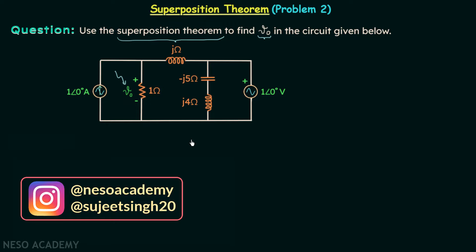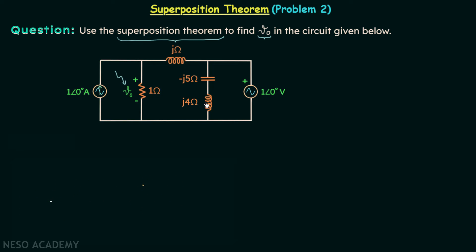When you observe the given network, you will find we have two sources. This one is source number 1, and this one is source number 2. Both sources are independent in nature. We also have two inductors and one capacitor in the network.